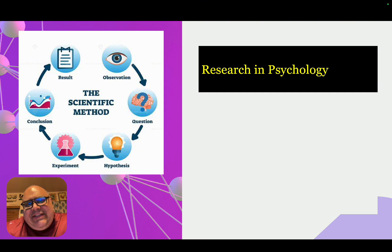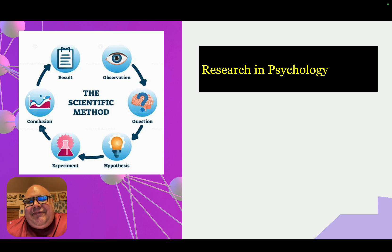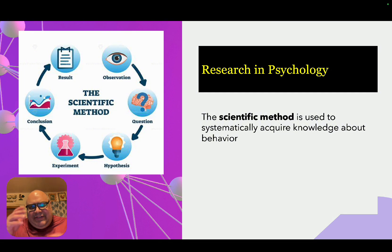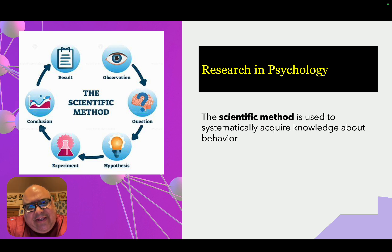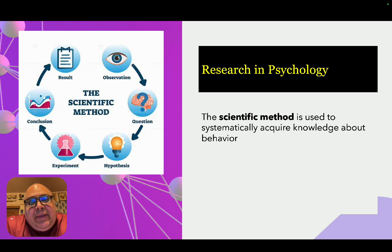The results help us consider whether our original hypothesis was correct or incorrect, and further help us develop more hypotheses going forward. This is the basic process of the scientific method. It's systematic — it's the way that all sciences, including psychology, acquire knowledge about whatever they're interested in.